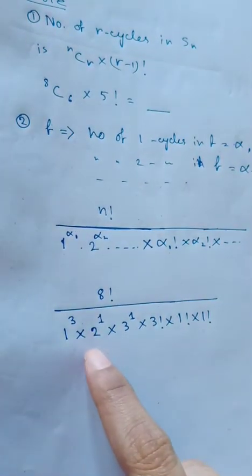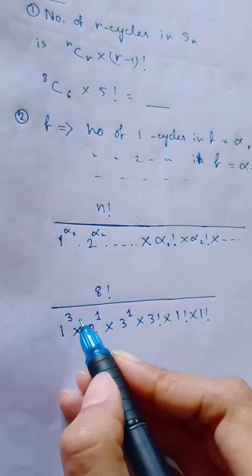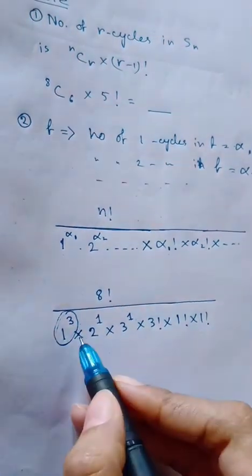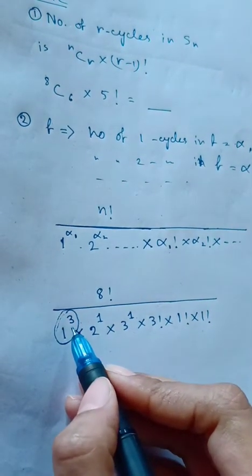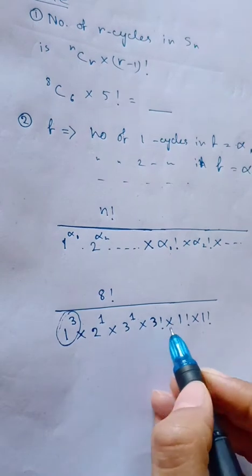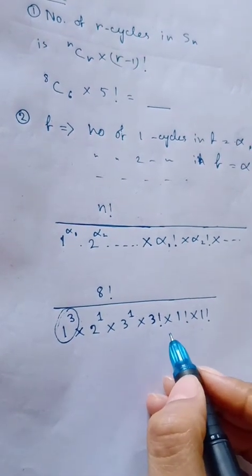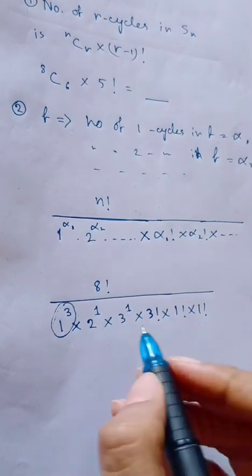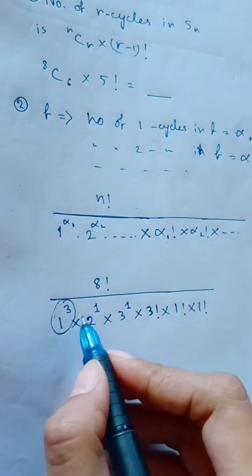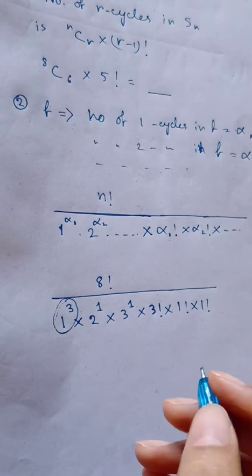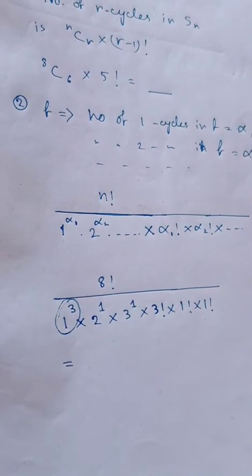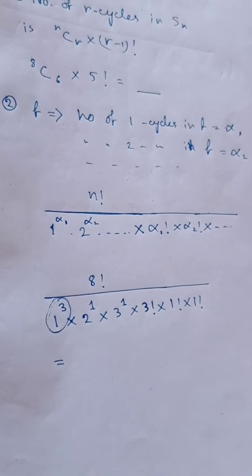Note carefully: students sometimes forget to include the 1-cycle factors in the denominator — both the 1^α₁ term and the α₁! factorial. This factor is very important and must be included. You can then calculate the result easily. Thank you for watching; don't forget to subscribe.